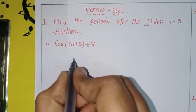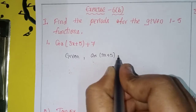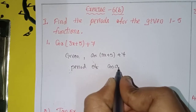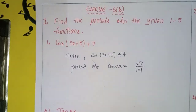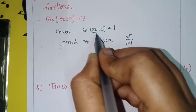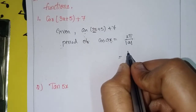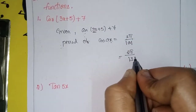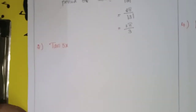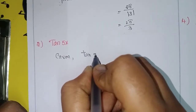The given function is cos(3x + 5) + 7. You know that the period of cos(ax) equals 2π divided by the modulus of a. Here, in the place of a, 3 is there. So the period of this function is 2π by modulus of 3, that means 2π/3.